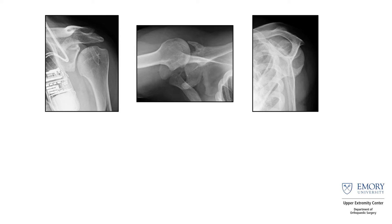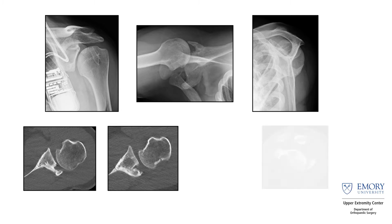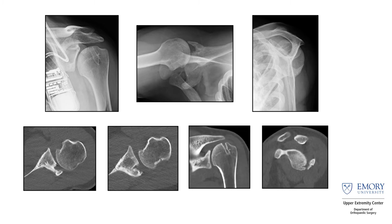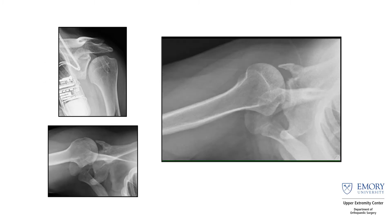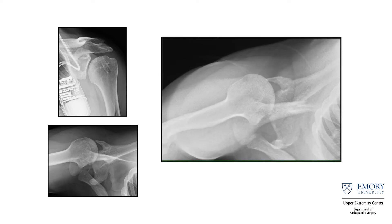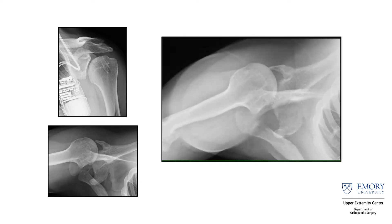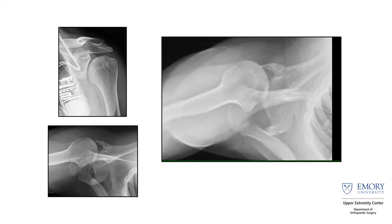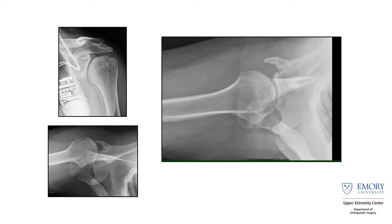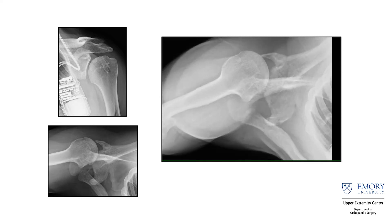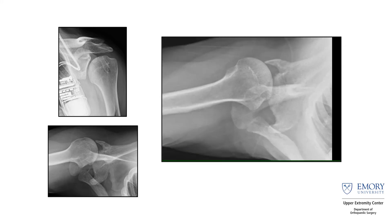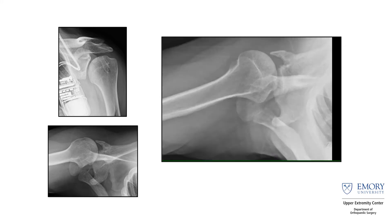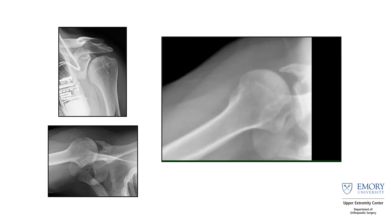There is some posterior de-centering visible on the axillary view, and on the CT scan you can also see some posterior de-centering. But when you look at the DDR, you can really get an understanding of what's going on — you can legitimately see his shoulder subluxed from inside the glenohumeral joint and then out posteriorly, and back out posteriorly where that bony Bankart lesion is.